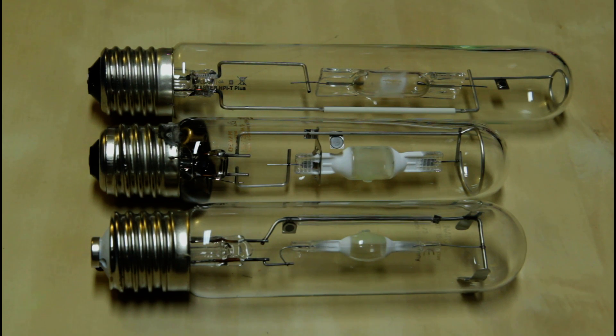In front of you at the top you can see a 400 watt Philips, in the middle a 250 watt Osram, and at the bottom is 150 watt Narva. These are used in all sorts of applications for outdoor use such as floodlights and streetlights.